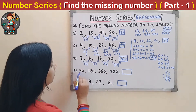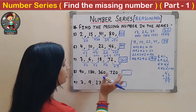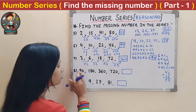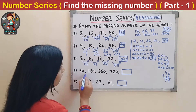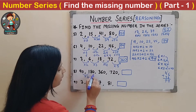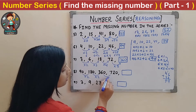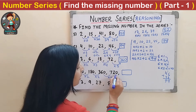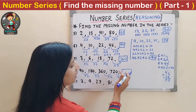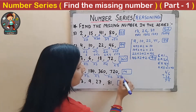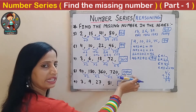Eighth question: 90, 180, 360, 720, _. It is clear that each number is double the previous. 90×2 = 180, 180×2 = 360, 360×2 = 720. So the next number is 720×2 = 1440.